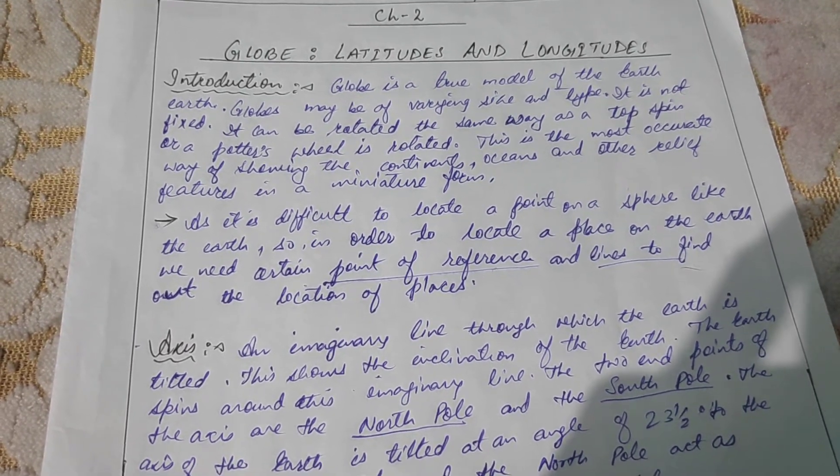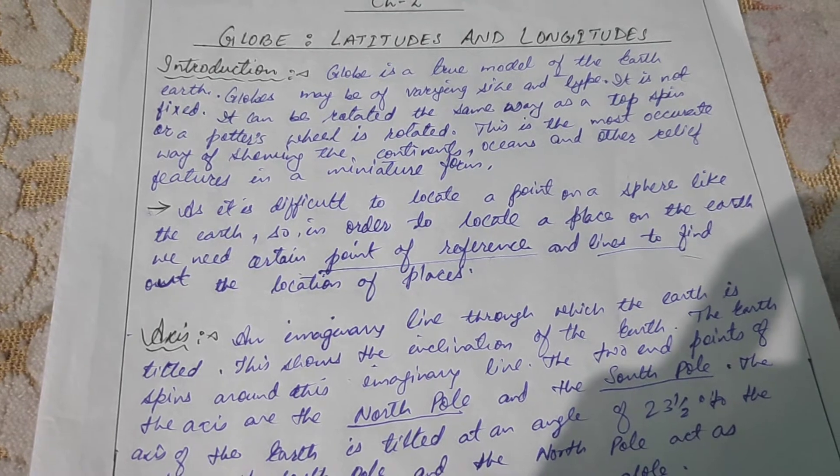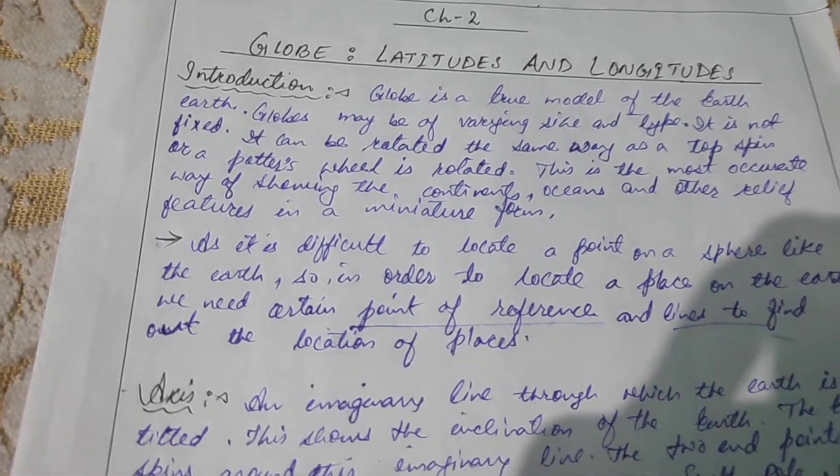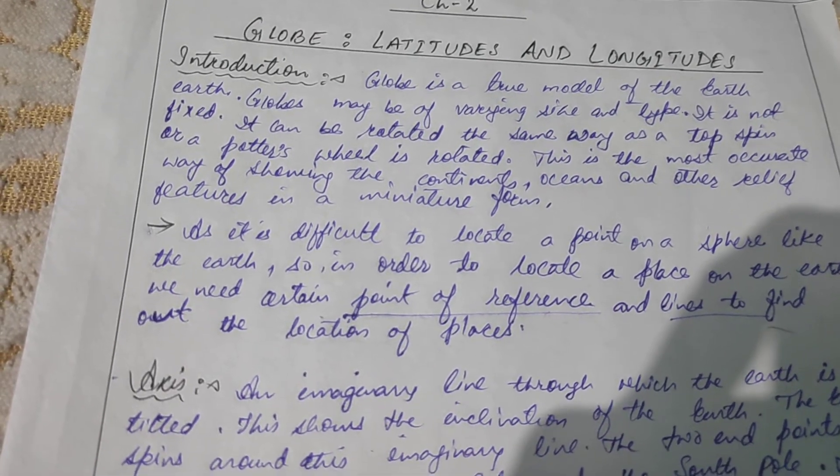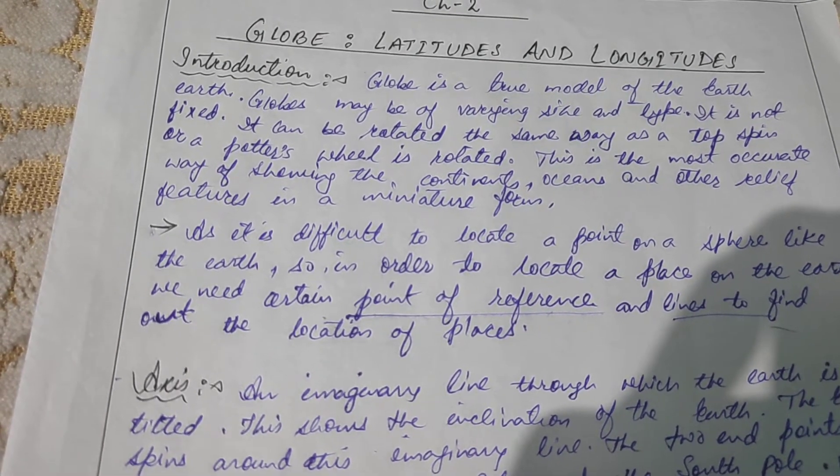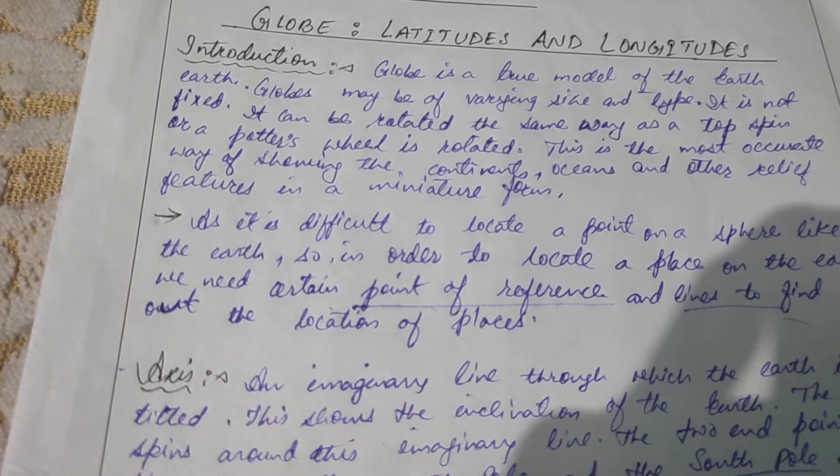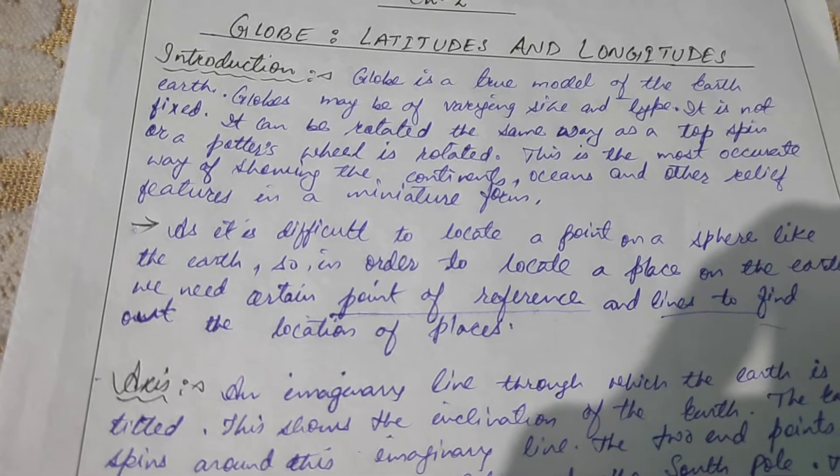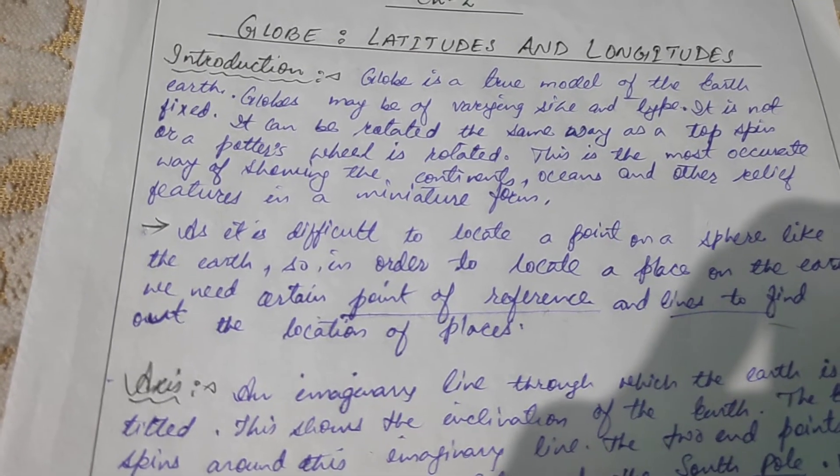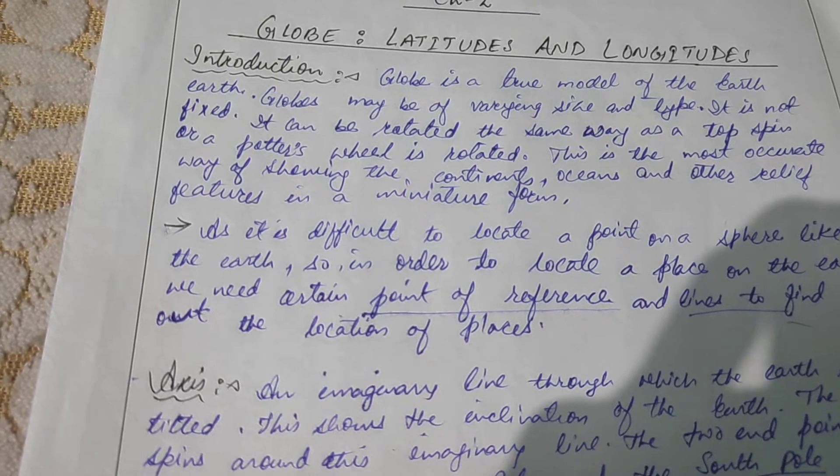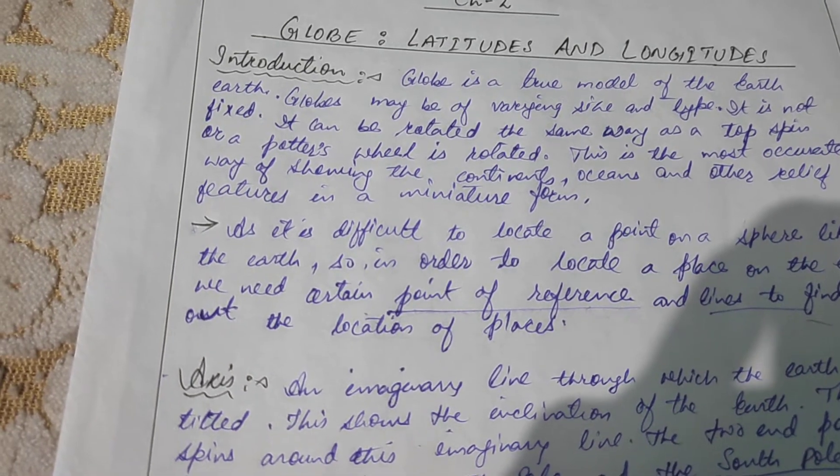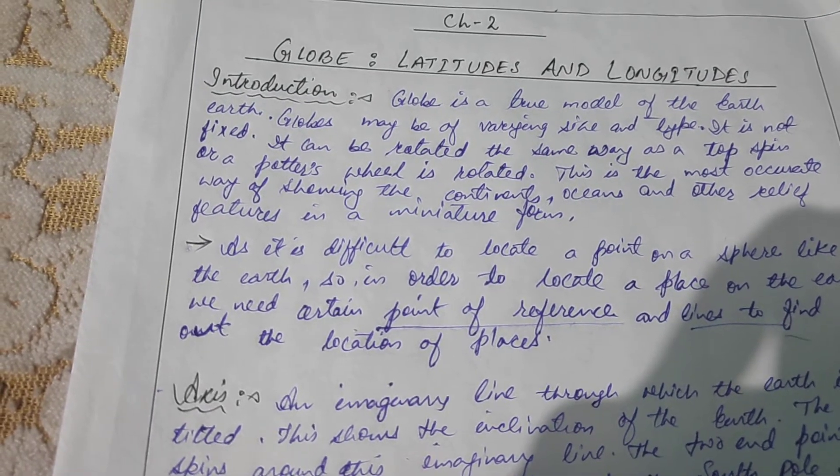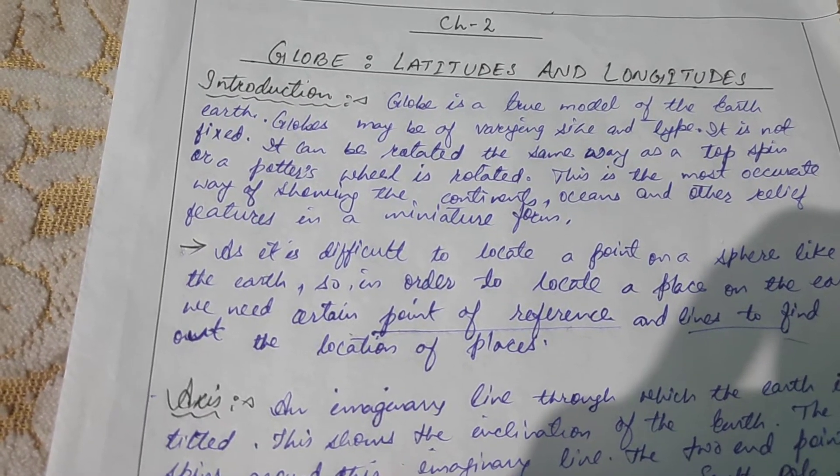We will first start with the basic concept of globe, latitude and longitude. In the previous chapter, you have read that our planet Earth is not a sphere. It is slightly flattened at the north and south poles and bulges in the middle. This shape of the Earth is called geoid.